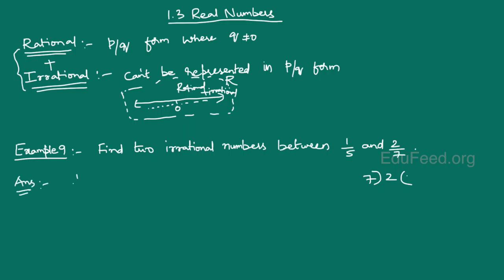1 by 5 clearly is 0.2. Now we will have to divide and find out what 2 by 7 is. As 2 is less than 7, we will have to take 20 over here. 7 times 2 is 14.